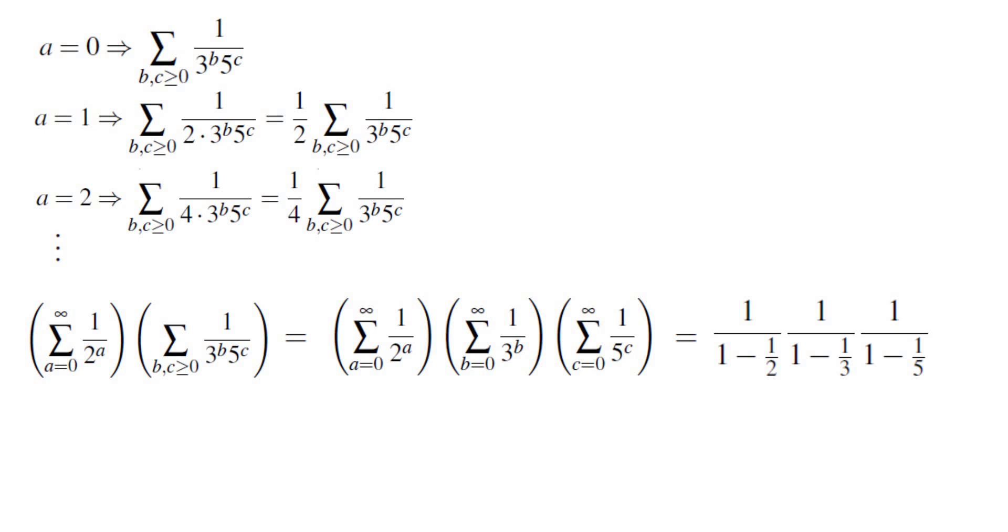The denominator of the first fraction is going to be 1 half so that becomes 2. The denominator of the second fraction is 2 thirds so that becomes 3 halves. The denominator of the third fraction is 4 fifths so that becomes 5 fourths. Multiplying those we get 15 over 4.